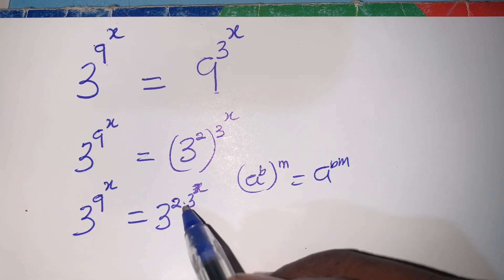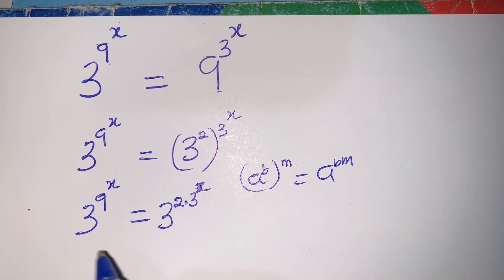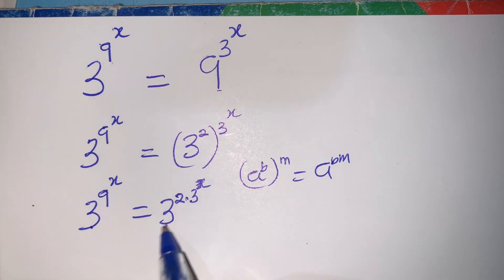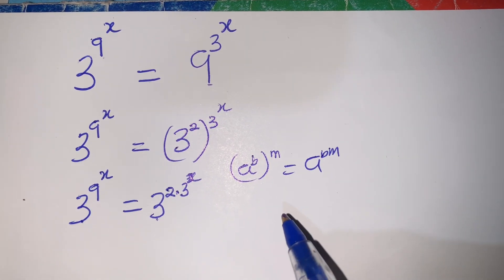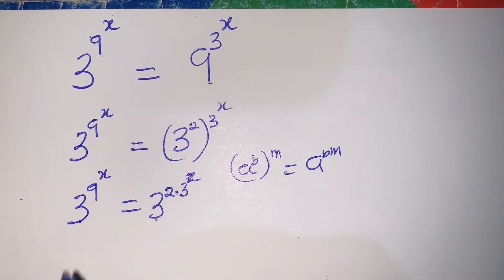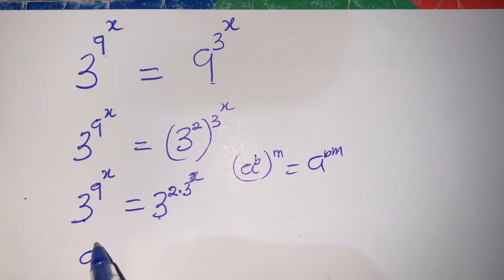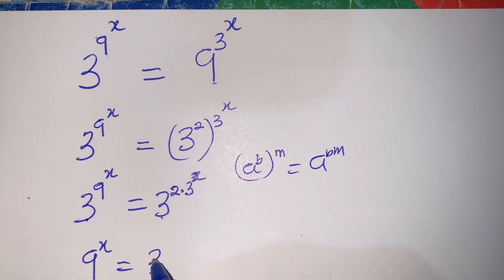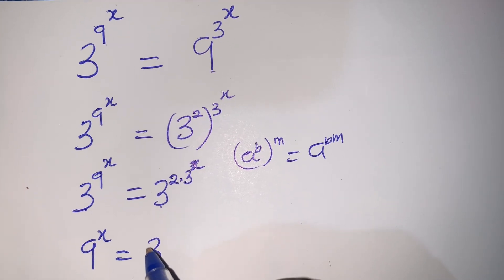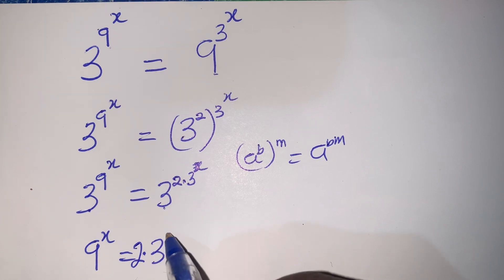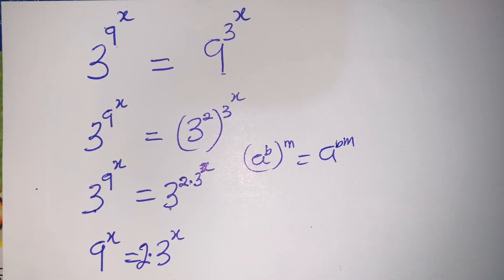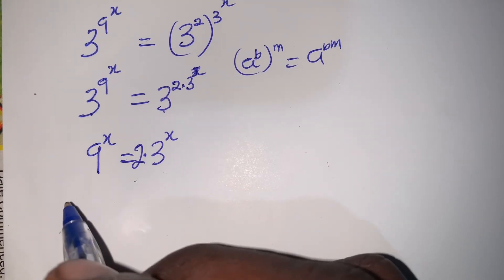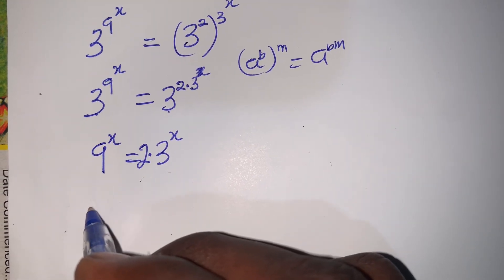Both sides have a base of 3. Since the bases are the same, I'll just equate the exponents, so I'll have 9^x equal to 2 times 3^x.